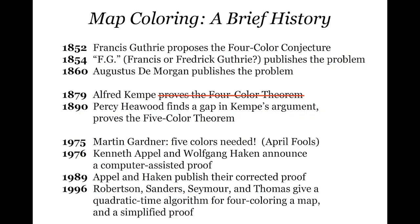In 1996, Robertson, Sanders, Seymour, and Thomas came up with a more efficient algorithm for a computer to four-color a map and found other efficiencies in the argument, managing to reduce the complexity of the proof. The original proof had a little over 1,800 cases the computer had to check; as of 1996 it was down to under 700. But there's still no human readable proof — just improvements in how easy it is to check the code and how efficient the proofs are.